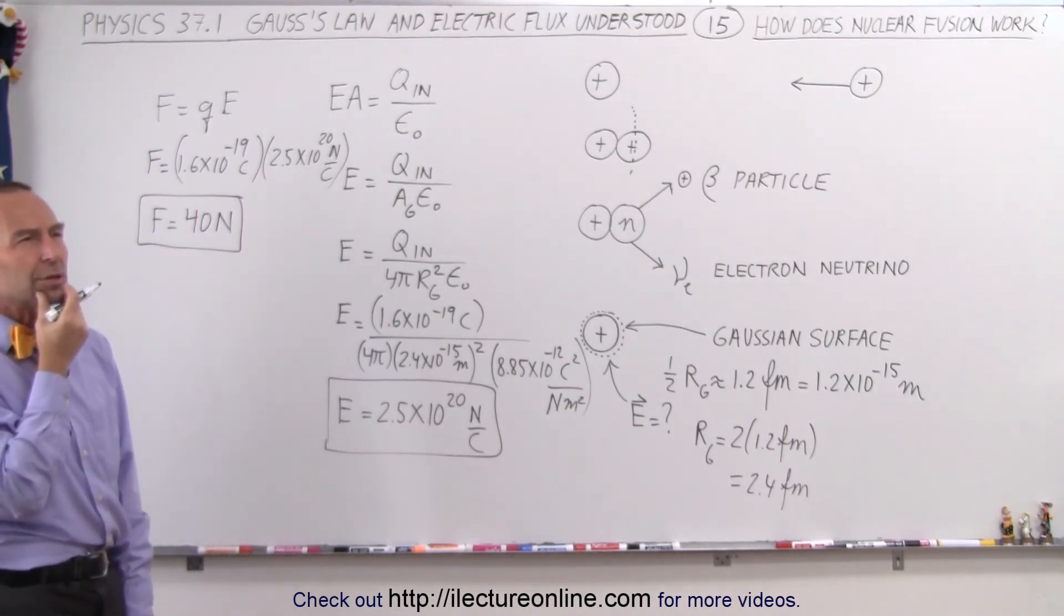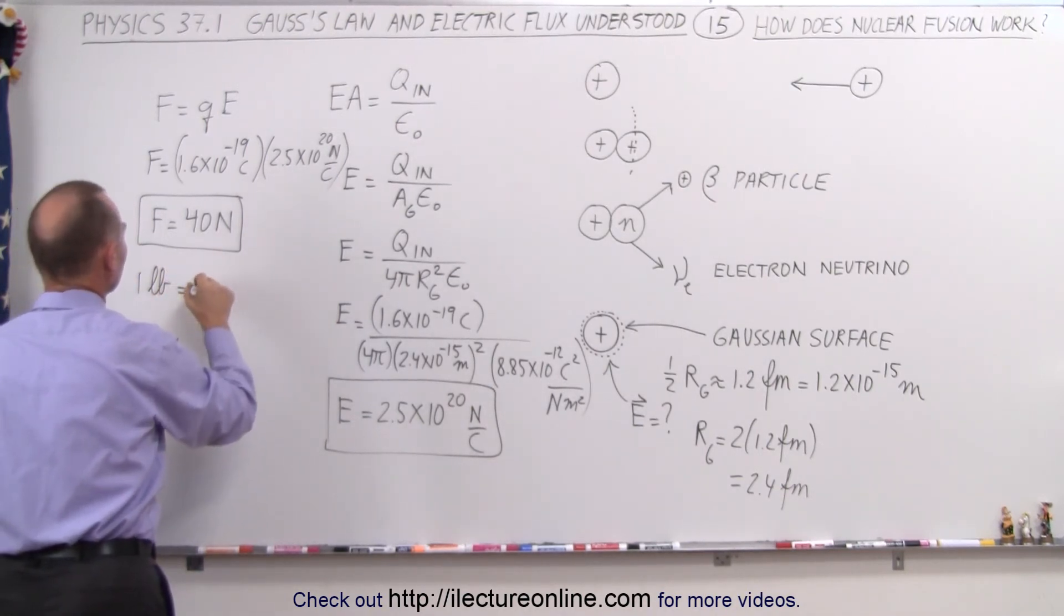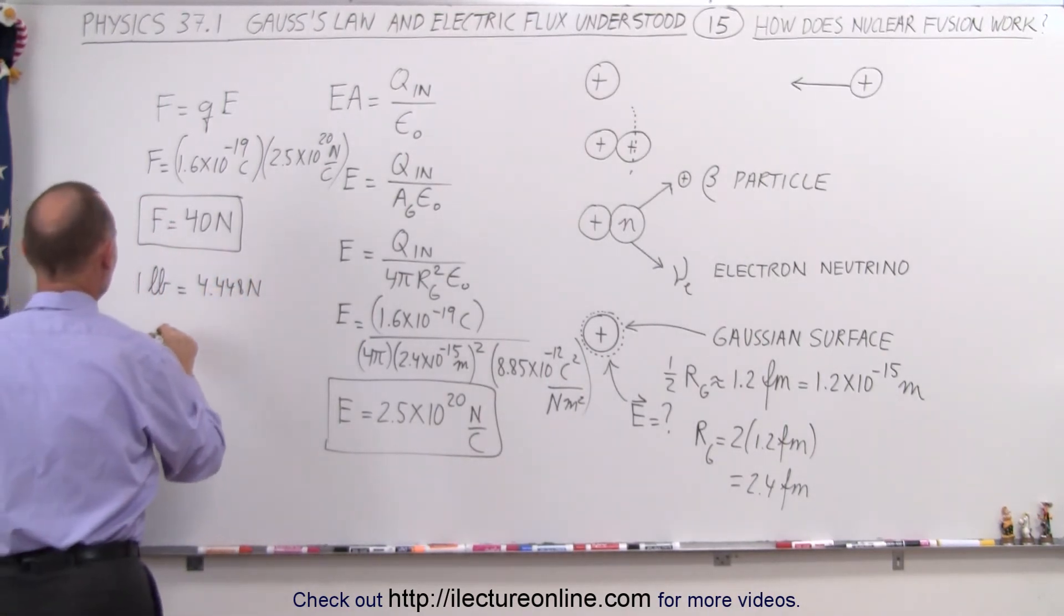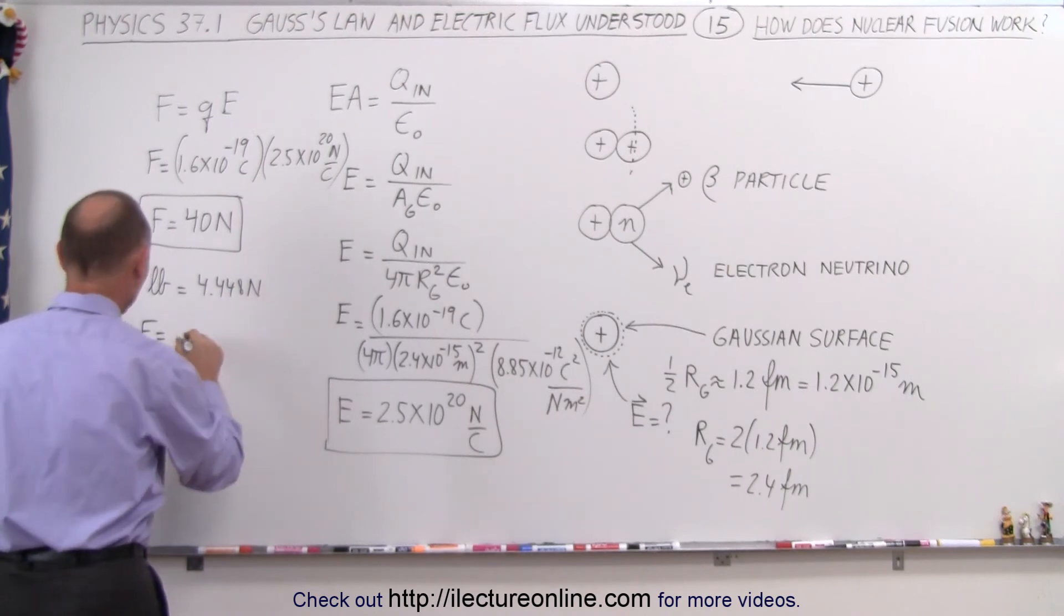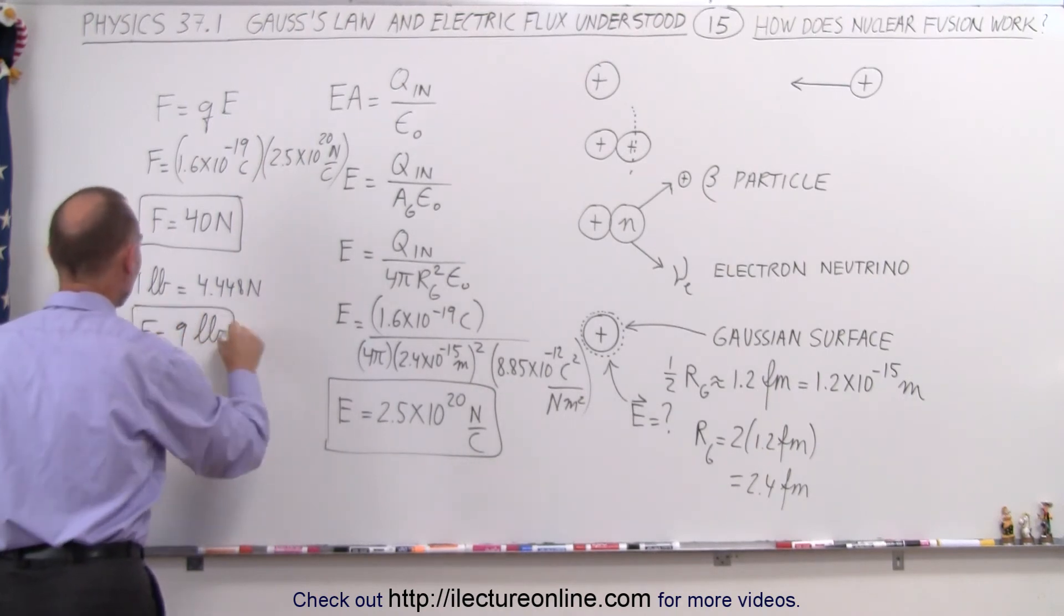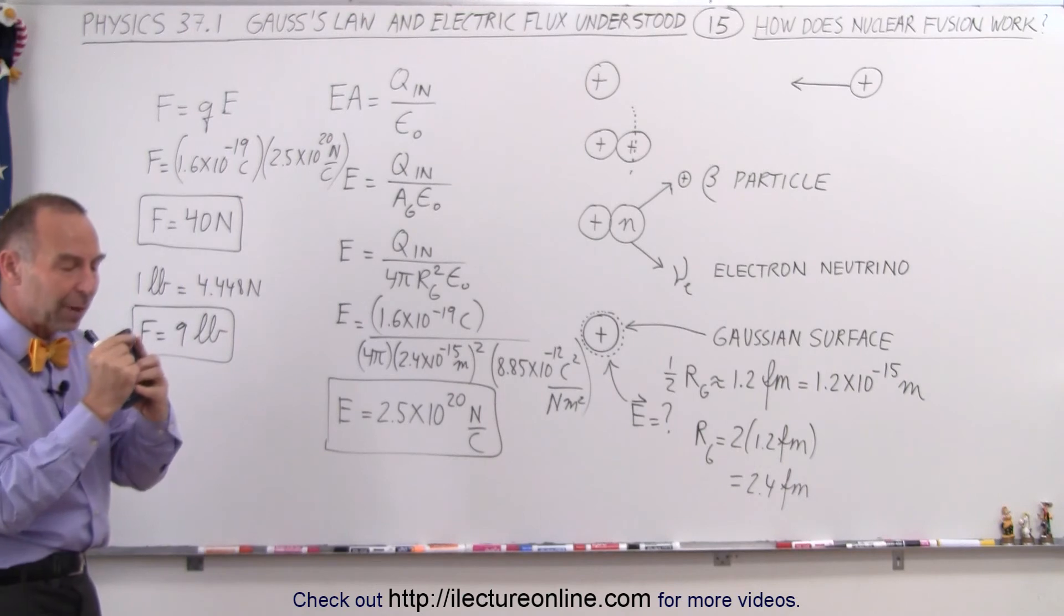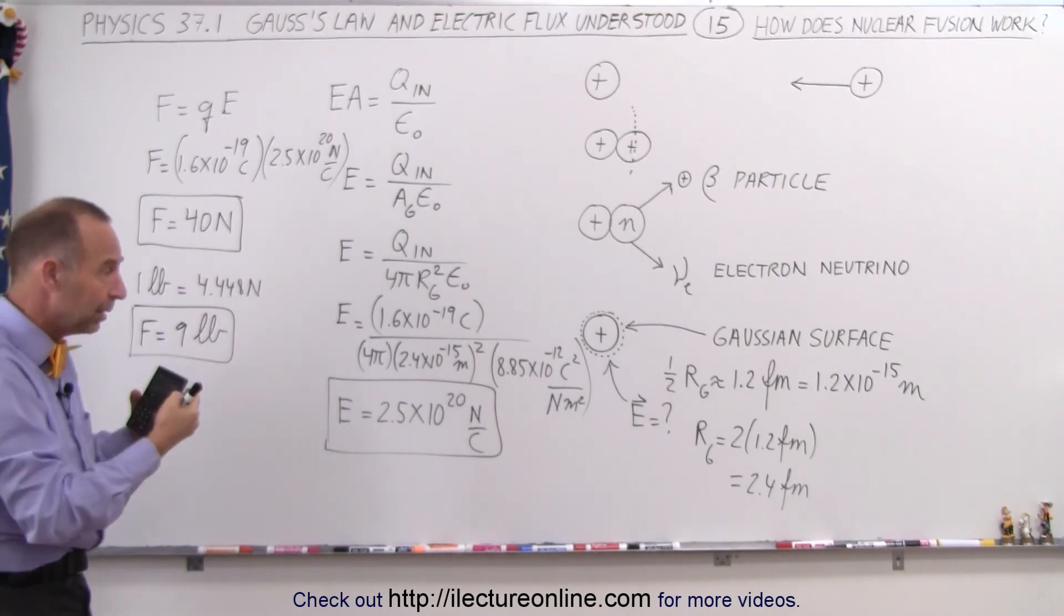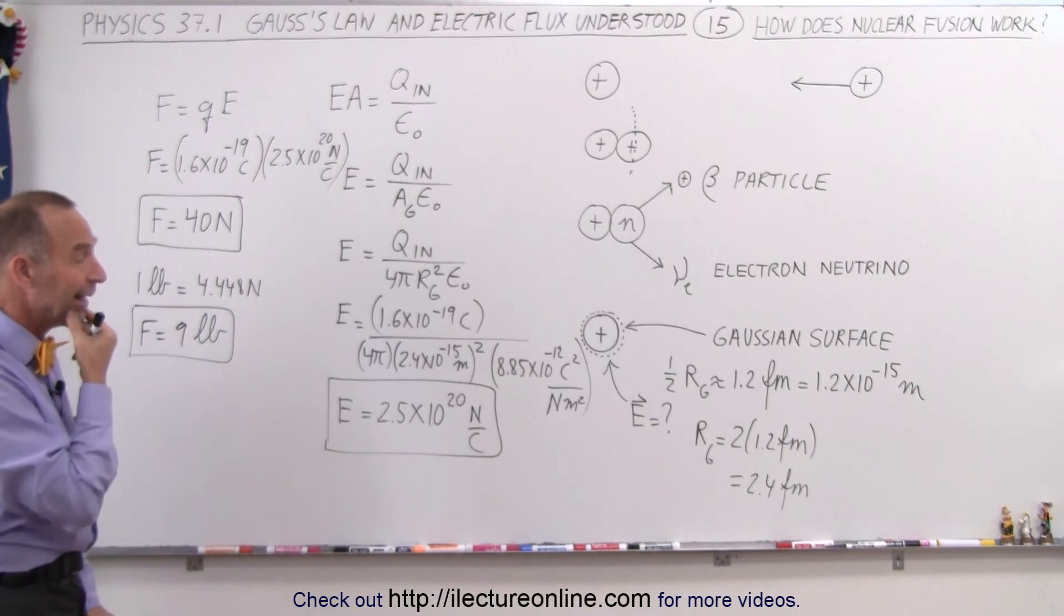Now, since a newton can be converted to pounds, we know that one pound is a force equivalent to about 4.448 newtons. Then we can say that the force is going to be equal to, divide that by 4.448 equals, that's roughly 9 pounds of force. Imagine that. For two protons to be pushed close enough together for them to be able to fuse together in a nuclear fusion process turning two protons into a deuteron, you have to have a force of 9 pounds pushing those two little protons together. That's absolutely enormous.